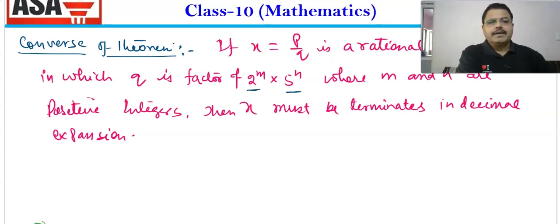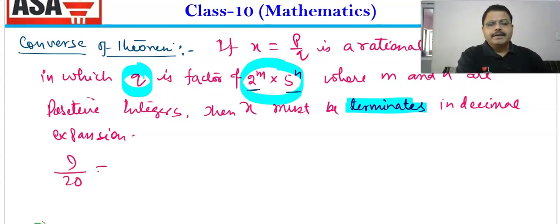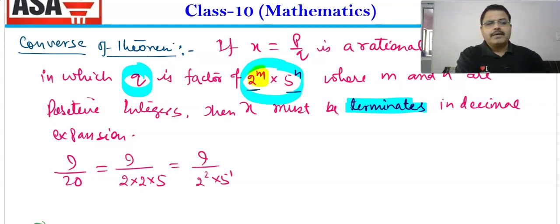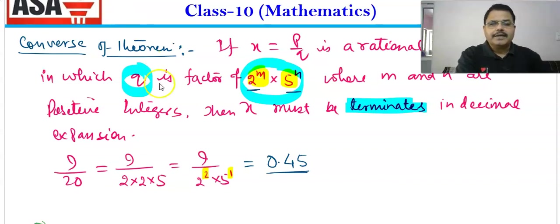If q is a factor of 2 and 5, then this expansion will terminate. For example, 9/20: 20 = 2² × 5¹, which is in the form 2^m × 5^n, so it must have a terminating decimal. Dividing 9 by 20 gives 0.45 — so it terminates. Another example: 13/25 = 0.52, which also terminates.